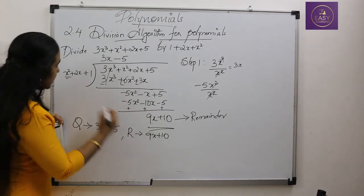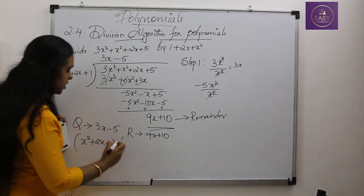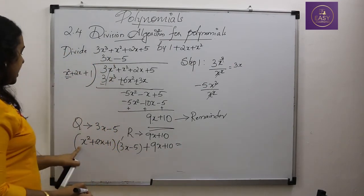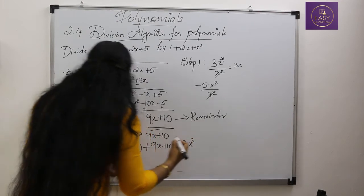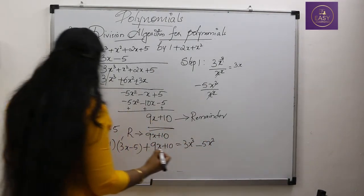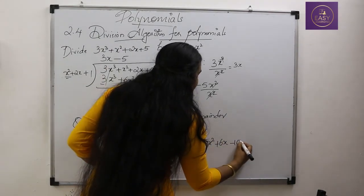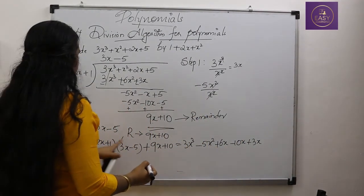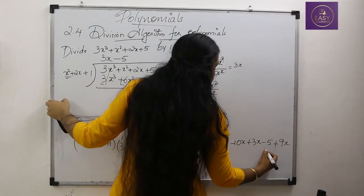Our divisor is x² + 2x + 1, quotient is 3x − 5, and remainder is 9x + 10. Multiplying: x² × 3x = 3x³, x² × (−5) = −5x², 2x × 3x = 6x², 2x × (−5) = −10x, 1 × 3x = 3x, 1 × (−5) = −5. Then we add the remainder: +9x + 10.